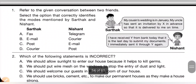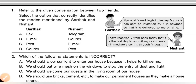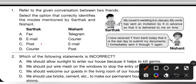First question: refer to the given conversation between two friends. Select the option that correctly identifies the mode mentioned by Sardak and Nishant. Sardak says his cousin's wedding is in January, and his uncle sent an invitation by X in advance so it is delivered on time. So the mode mentioned by Sardak is either post or courier, option C or D.